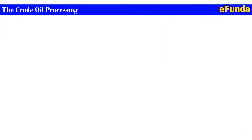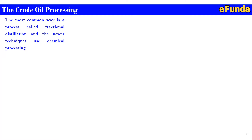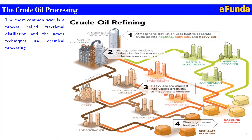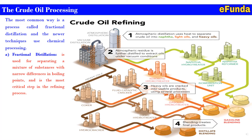For understanding refinery processes, the crude oil process will be discussed here. The most common way is a process called fractional distillation, along with newer techniques used in chemical processes. The crude oil refining process involves a number of steps. The main step is fractional distillation, used for separating a mixture of substances with a narrow difference in boiling points, and it is the most critical step in the refining process.